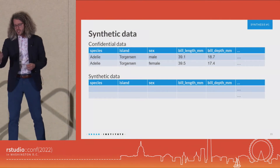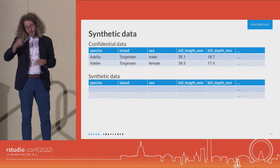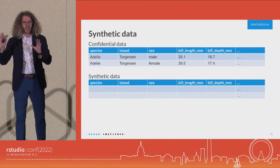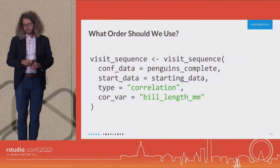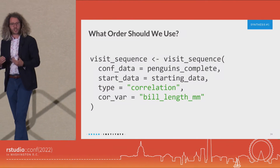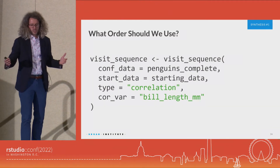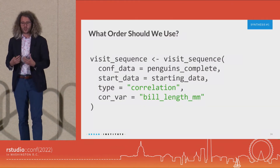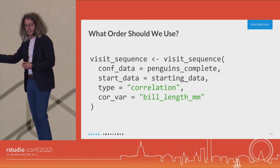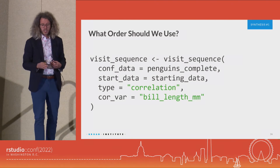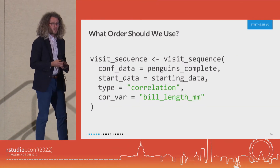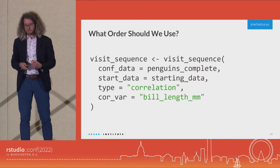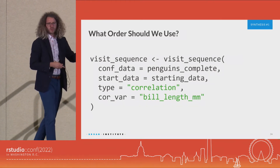We have information about species, island, sex, and numeric measurements of the different penguins. We're really going to focus on these numeric variables, and our goal is to create synthetic data that match the layout of that confidential data. We can start asking ourselves: if you have 200 variables, what order should we use? Tidysynthesis has a function that employs different heuristics to determine synthesis order. In this case, I'm going to use my extensive knowledge of penguins — which is absolutely none — to determine that bill length is a very important variable, and then synthesize the remaining variables in order from most correlated with bill length to least correlated. Once we create this visit sequence object, it's going to be reused in a lot of other functions.